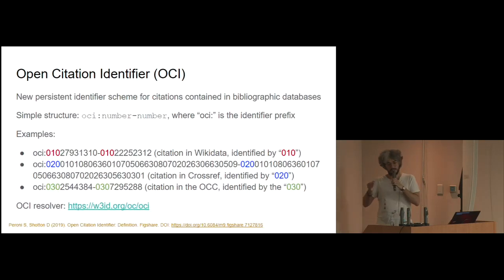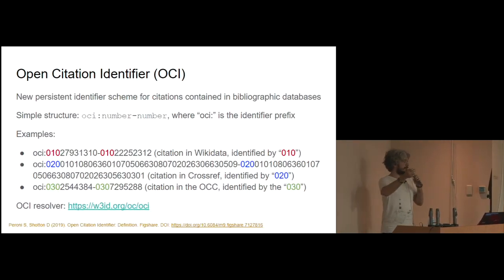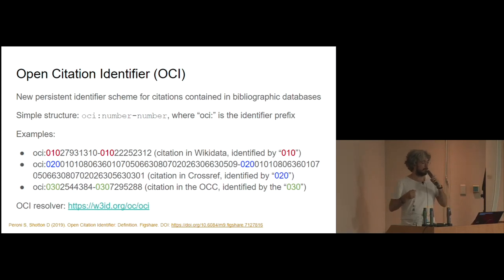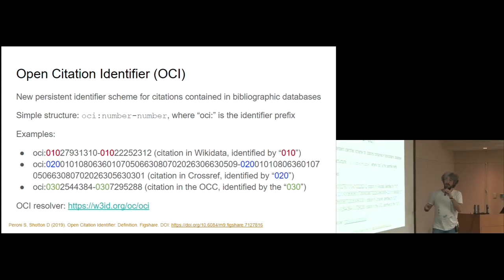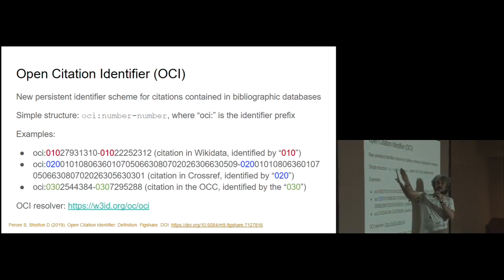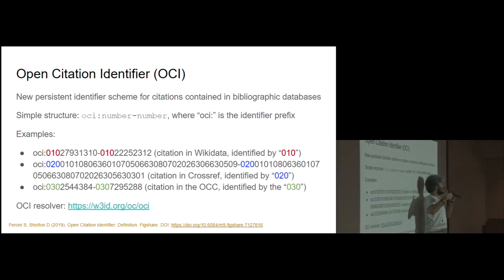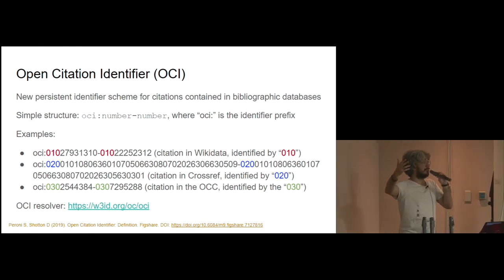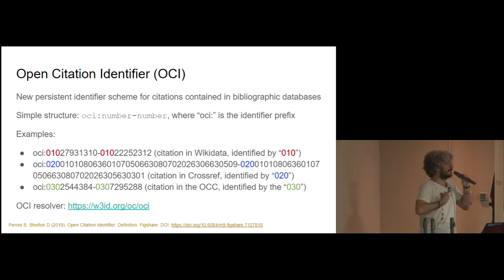Since we now describe citations as proper entities that have attributes associated to them, we also invented a new persistent identifier that has been recognized recently by several people around the world, that we call the Open Citation Identifier (OCI). The OCI has a very simple structure: it is made by a string, a colon, a number, a dash, and a number — where the first number identifies the citing entity and the second number identifies the cited entity. We have also made available a resolver to get citation information starting from this identifier in different databases, such as Wikidata, Crossref, and of course the OpenCitation corpus.